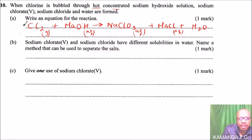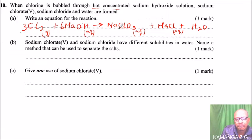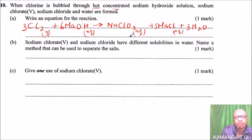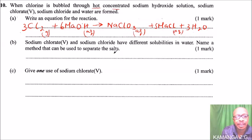We start by putting 3 here, then here we put 6, then here we put 5, and here we put 3. You already learned how to balance equations, so we will not go back to that.